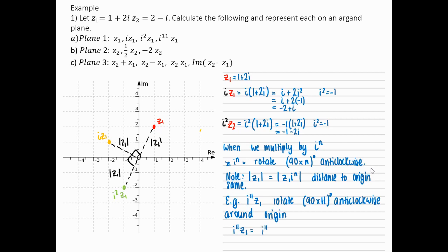Now, if we do it algebraically, we have i to the 11 times 1 plus 2i in this example. i to the 11, remember that's like 4 times 2 plus 3. I know what i to the power of 4m plus 3 is. That's equal to minus i. So it ends up with minus i plus 2 or 2 minus i.